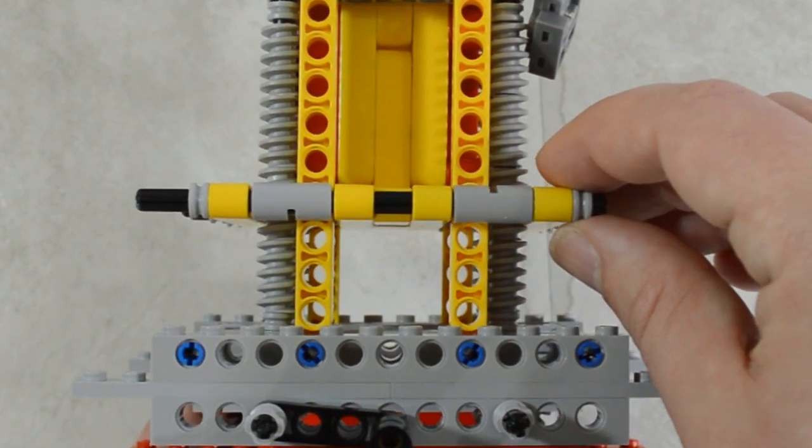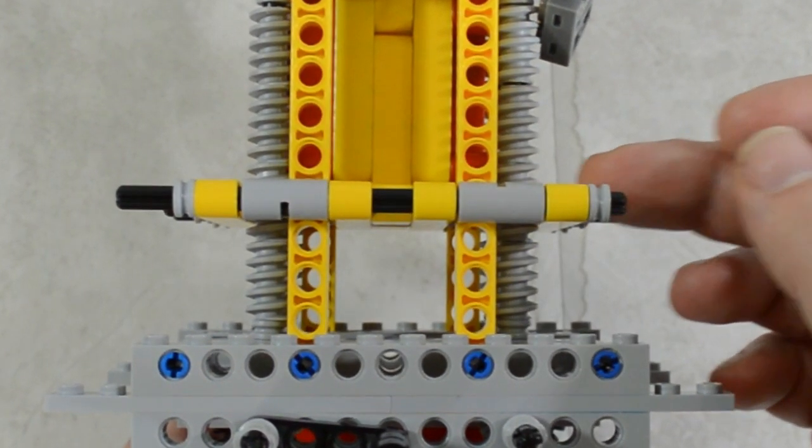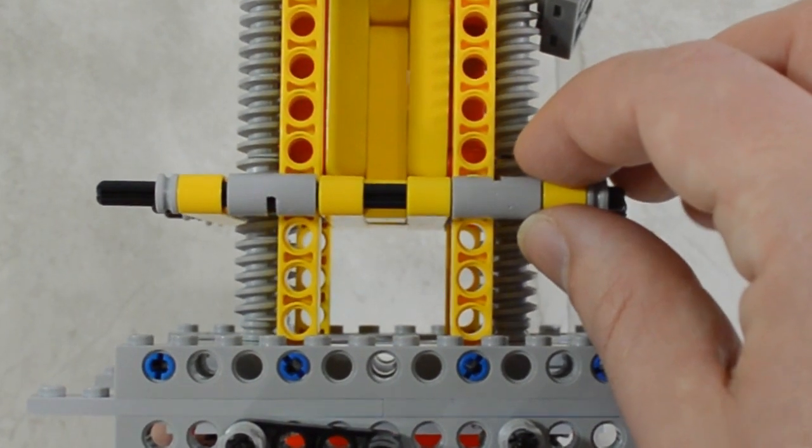You want to make sure that it's loose enough though, so that the worm gears don't catch on those beams and cause the platform to lock up.